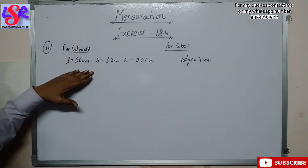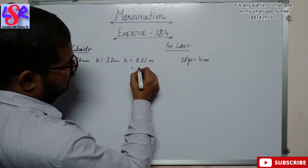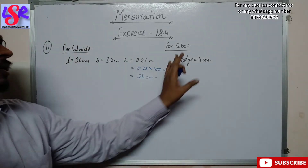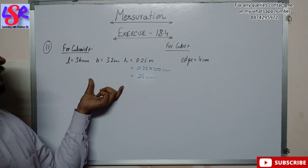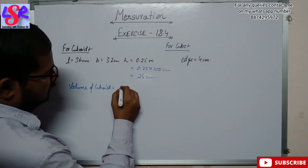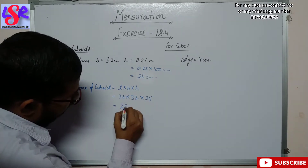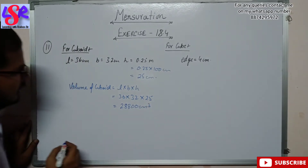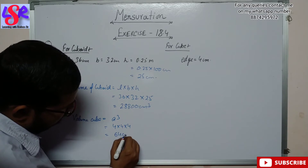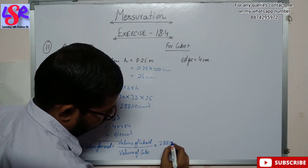Here we have a cuboid with dimensions 36 cm by 32 cm by 0.25 meter. We convert 0.25 meter to 25 centimeter. The cube has an edge of 4 centimeter. The volume of the cuboid is L × B × H = 36 × 32 × 25 = 28800 cubic centimeter. The volume of one cube is 4³ = 64 cubic centimeter. The number of cubes formed equals 28800 ÷ 64.